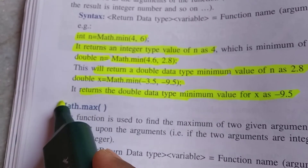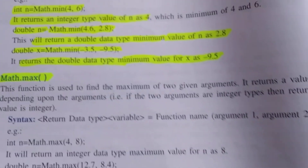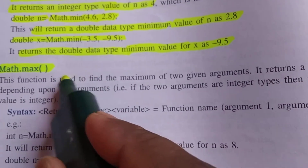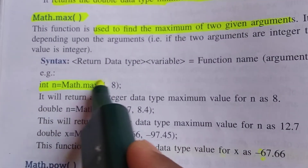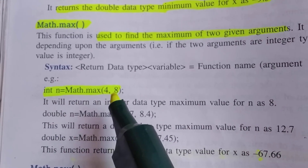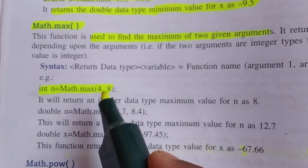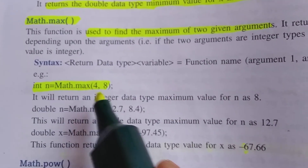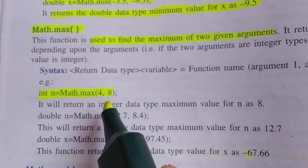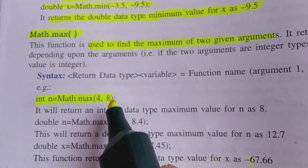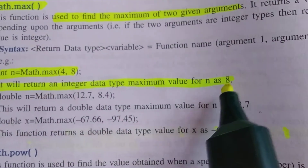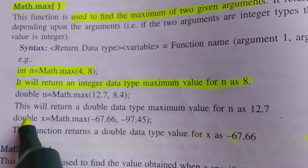Just like Math.min, there is another function known as Math.max. It is just the opposite — minimum was giving you the minimum, while Math.max is used to find the maximum between two numbers. For example: int n = Math.max(4, 6). The maximum here is 6, and the return type will be int because both arguments are of type int. The value will be stored back in n.